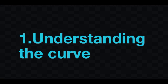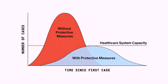Understanding the curve: The word 'curve' in the term 'flattening the curve' doesn't refer to the true number of COVID-19 cases. Rather, it refers to the projected number of people who will contract COVID-19. The curve is actually two curves on a chart that demonstrates the spread of the virus with and without protective measures such as social distancing. A dotted line through the curves represents the peak capacity of the healthcare system to care for a projected number of patients.